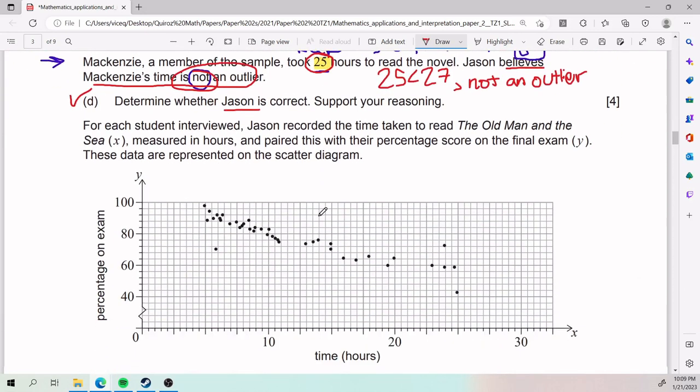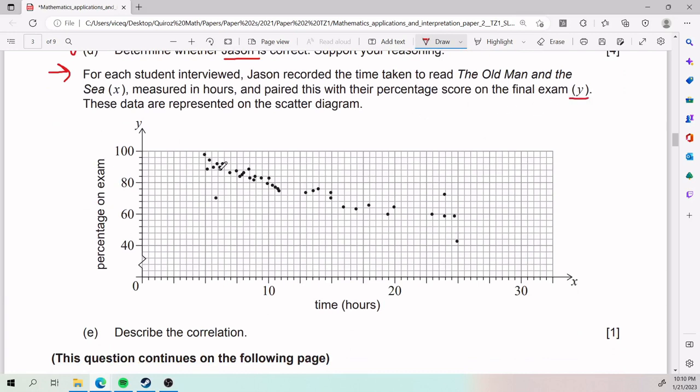That's pretty much it. Then they tell us that for each student interviewed, Jason recorded the time taken to read the old man in the sea, measured in hours, and paired this with the percentage score in their final exam. These data were presented on the scatter diagram. And so on the y-axis, we have percentage on the exam. For the x-axis, which is in hours, we have time. That means, just so that we are all on the same page, that someone that took 10 hours to read the old man in the sea got about an 80% on the exam. Someone that took, say, whatever this amount is, got around 70% on the exam. So that is how you read this diagram.